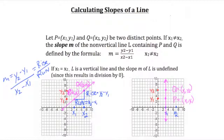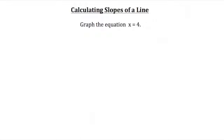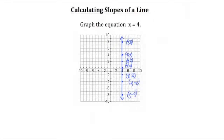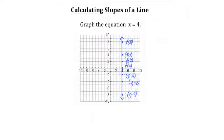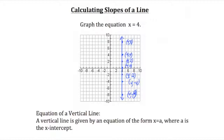Let's look at an example. In this question, we are asked to graph the equation x equals 4. If we plot points on the graph with all x-coordinates being 4 — such as (4,0), (4,2), (4,4), (4,8), and in the negative quadrant (4,−2), (4,−4), (4,−8) — when we connect those points, we get a vertical line. This brings us to the theorem regarding vertical lines: a vertical line is given by an equation of the form x equals a, where a is the x-intercept.